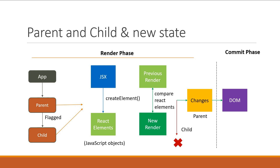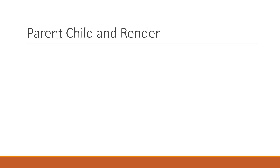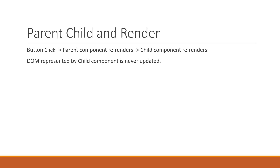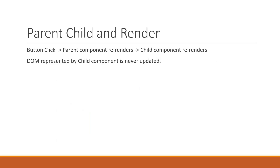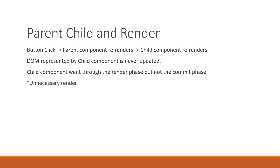There is one point I want to stress on. In our example, every time we click on the first button, the parent component re-renders and so does the child component, but the DOM node that the child component represents is never updated. For the child component, the JSX was converted to a React element and the new element was diffed with the old element. Since both elements were the same, React did not have to mount anything to the DOM. So the child component went through the render phase but not the commit phase. This is commonly referred to as an unnecessary render — React went through so much work in the render phase only to ignore or discard the render output and not apply it to the DOM.